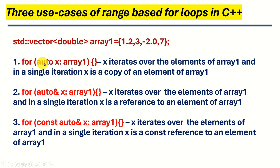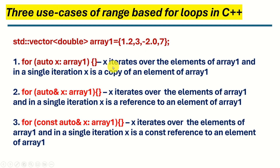In the first use case, we write 'for', then 'auto x', then the container name — in our case 'array1' — and then inside you write some code. The idea is that x iterates over the elements of array1, and in a single iteration x is a copy of an element: x becomes 1.2, then 3, then -2, then 7. Keep in mind that with this formulation x is a copy of an actual element inside array1.